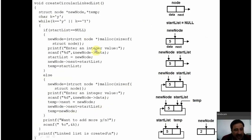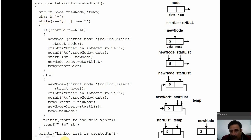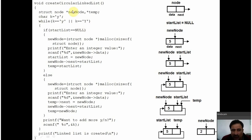You are calling the circular linked list function. Let's jump to that function. Here I am making use of two pointers — one is newNode, another is temp. Variable k is a character variable which is initialized to small y. This is the while loop which will keep running for the time the value of variable k is either small y or capital Y. So, in this program, you will be creating nodes for the circular linked list for as long as the user wants.